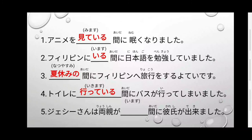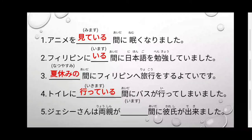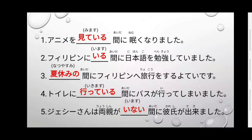Goban — saigo. Jessi-san wa, ryoshin ga [blank] aida ni, kareshi ga dekimashita. Jessi is the topic of the sentence. Ryoshin means parents. Kareshi ga dekimashita means she got a boyfriend. The verb here is imas — we make it negative, so it becomes inai. So: Jessi-san wa, ryoshin ga inai aida ni, kareshi ga dekimashita. In English: While Jessi's parents were not around, she found her boyfriend — habang wala ang parents niya, nakapaglandi siya at nagkaroon ng jowa.